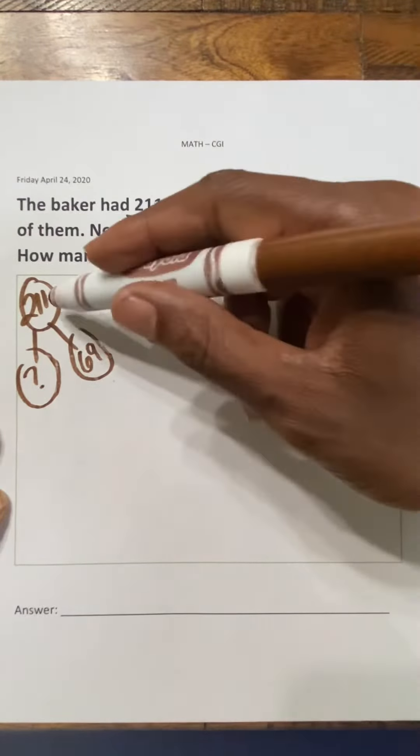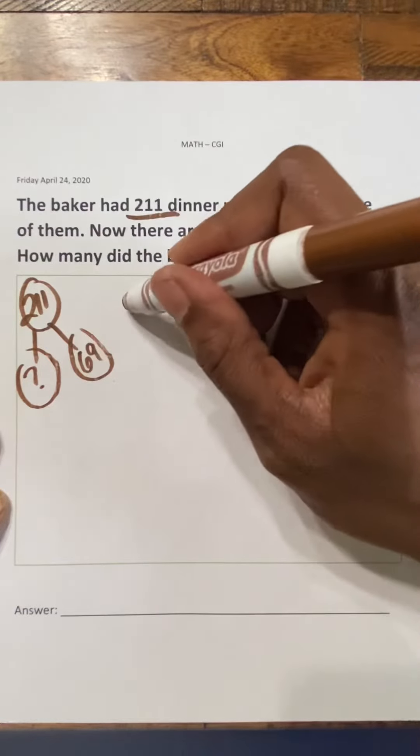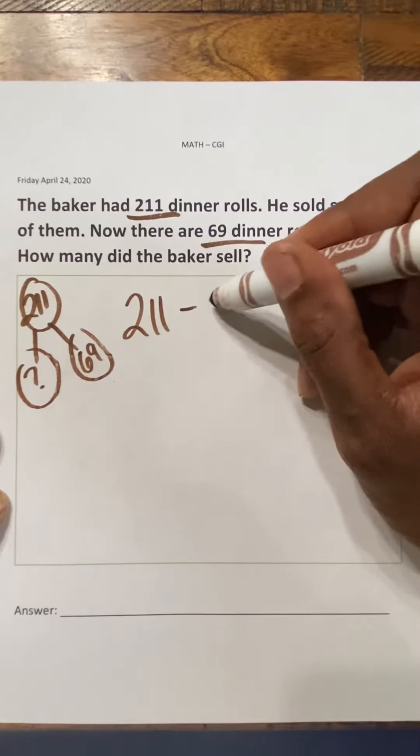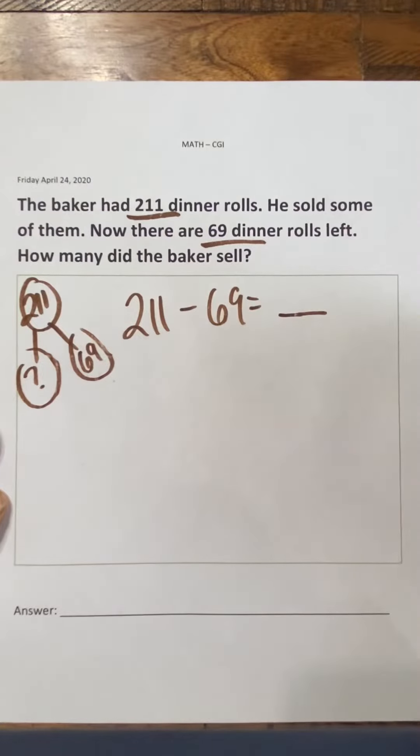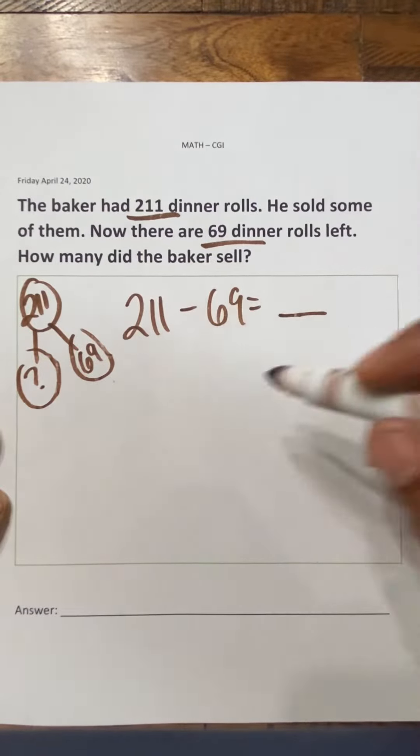We know how number bonds work. You subtract a part from the whole. So 211 minus 69 equals what we don't know, or the other part. So let's use the expanded form.